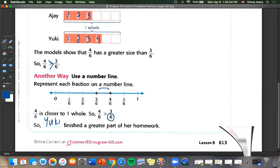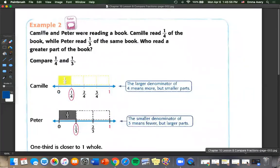Let's see the next example. Camille and Peter were reading a book. Camille read one fourth of the book while Peter read one third of the same book. Who read a greater part of the book?